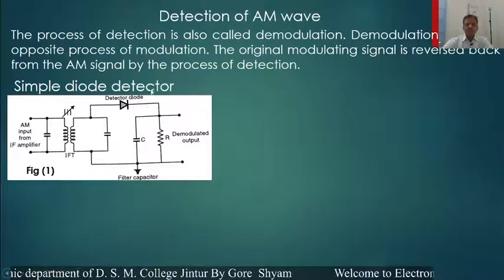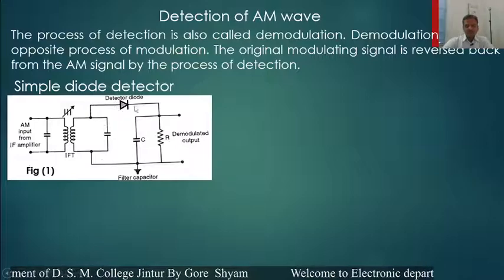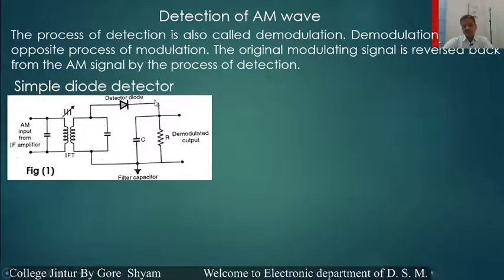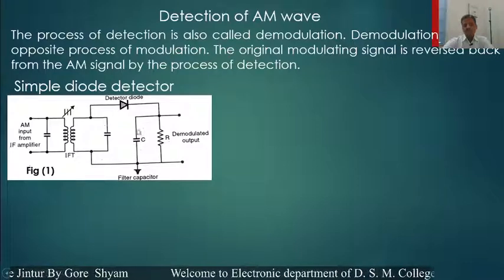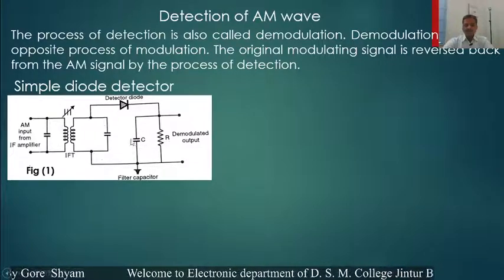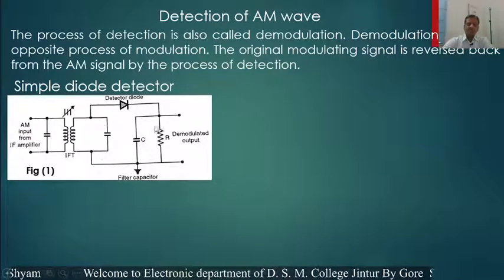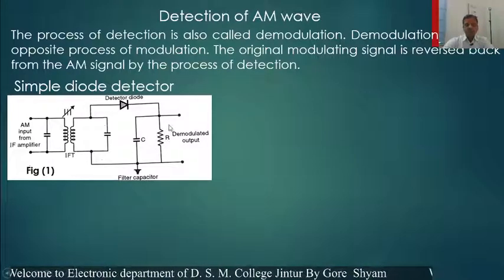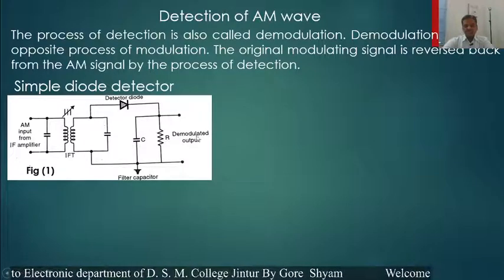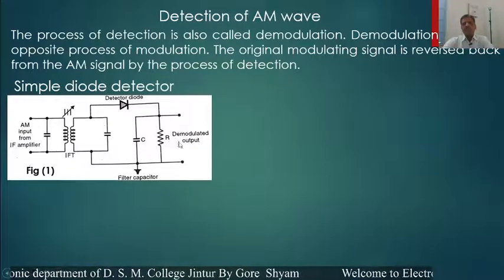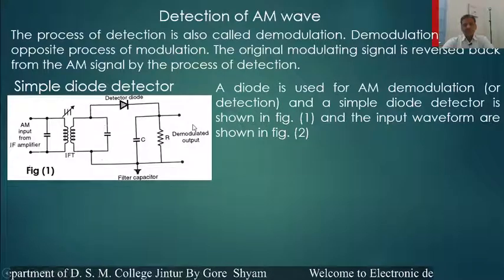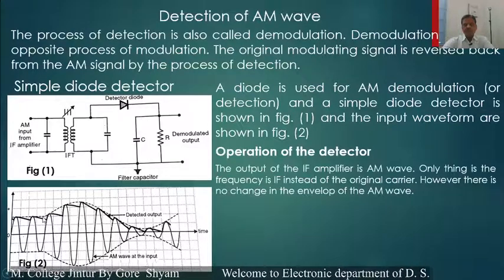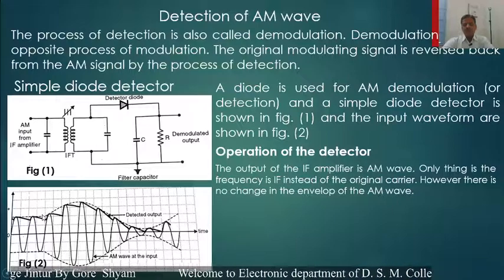When the input signal is an amplitude modulated carrier wave, this diode conducts for the positive half cycle. When the diode conducts, current flows through it and due to that the capacitor is charged. When the capacitor is fully charged, it discharges through this resistance. The output is taken across this resistance, and that output is the demodulated output. This operation of demodulation is a very simple operation.